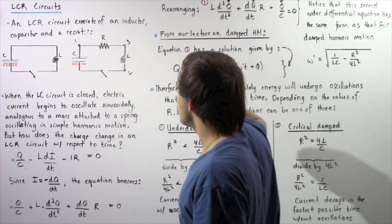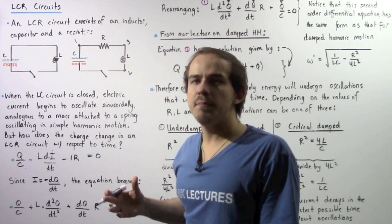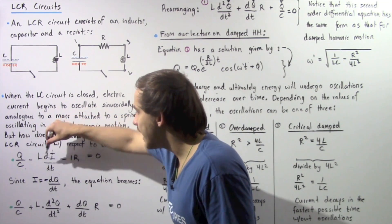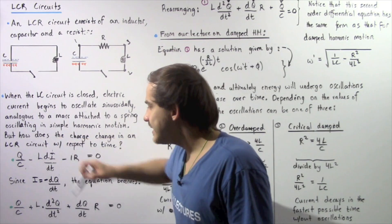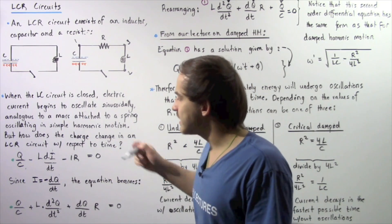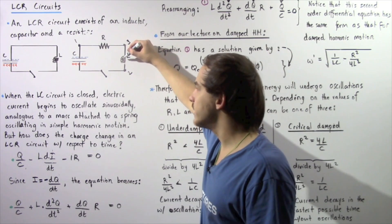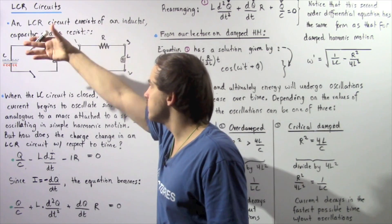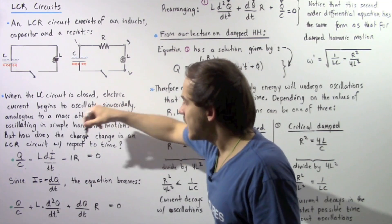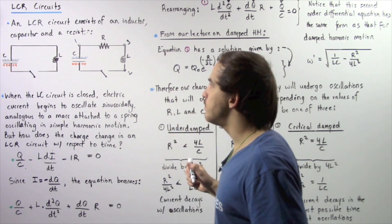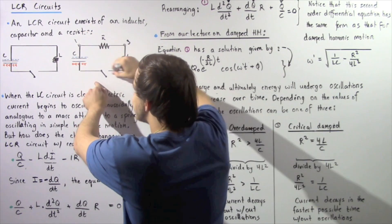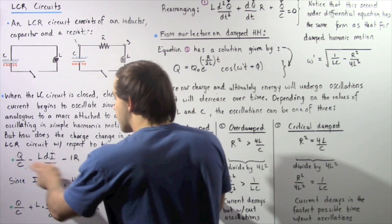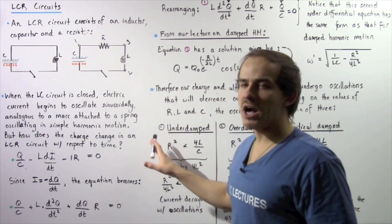Going from position two to position three, there is a voltage drop given by −L(di/dt), where di/dt is the rate of change of current with respect to time and L is the inductance. Going from position three back to position one, there is another voltage drop given by −IR. Since we begin and end at the same position, the sum equals zero, giving us our equation from Kirchhoff's second rule.